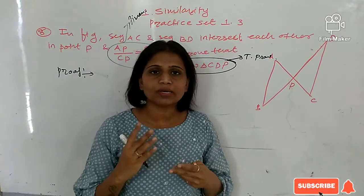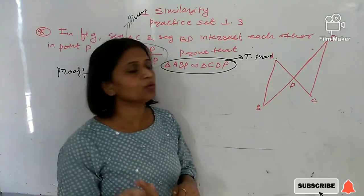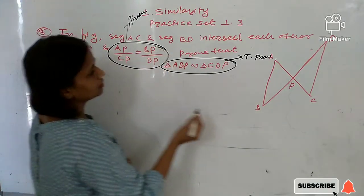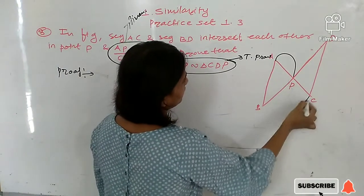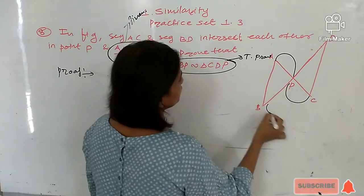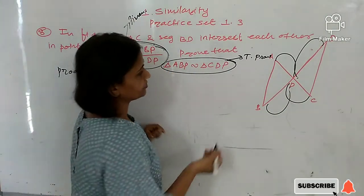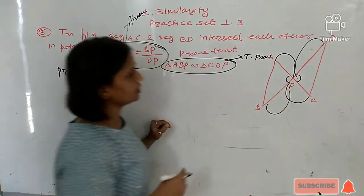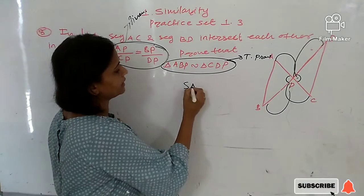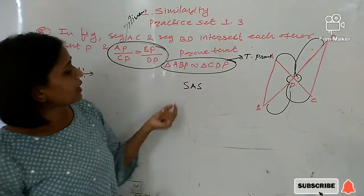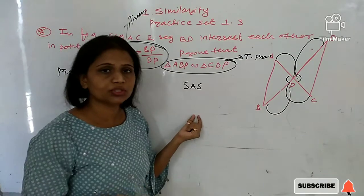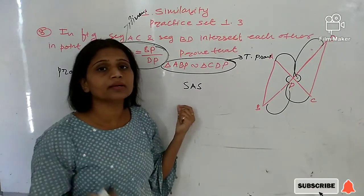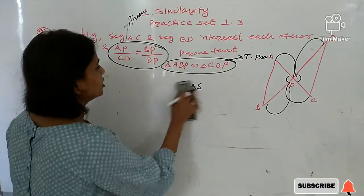There are three or four tests of similarity. Here, since the ratios are given equal, we will use the Side-Angle-Side test. If two corresponding sides are in proportion and the angle included by these two sides is congruent, then we can apply the Side-Angle-Side test.